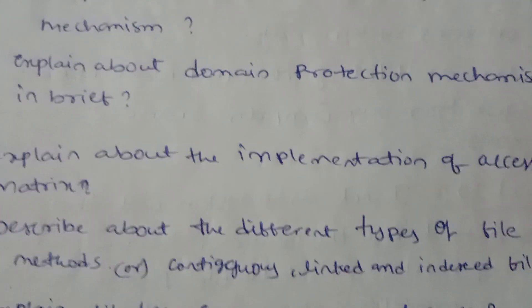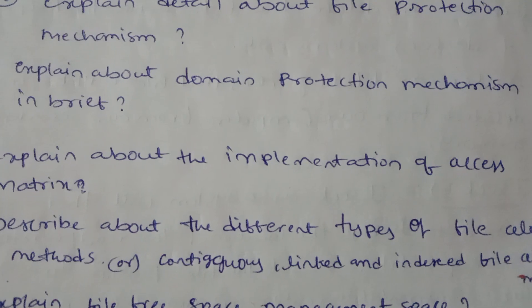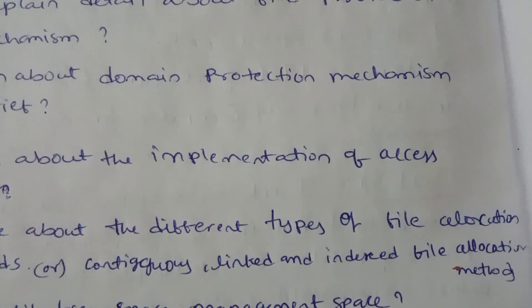Describe about the different types of file allocation methods. Contiguous, linked, indexed file allocation. This is the intent of file allocation.